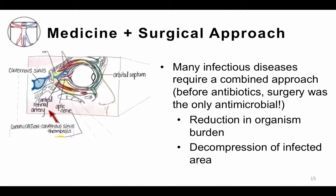The combined medical and surgical approach is common in many infectious diseases. Before antibiotics, surgery was the only antimicrobial. Surgery often results in reduction of the organism burden and decompression of the infected area. Simple abscesses, such as those found on the skin, can often be treated with surgery alone — incision and drainage — and don't require antibiotics.